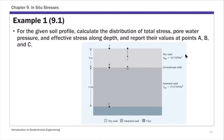This is Example 1. We are given a soil profile with a ground surface and a water table some distance below it. For this problem, we assume dry sand above the water table, so instead of using gamma moist, we use gamma dry. The second layer uses saturated unit weight. We will calculate total stress, pore pressure, and effective stress. The thickness of both layers is known.